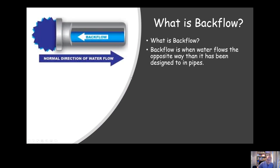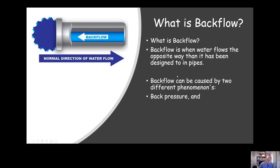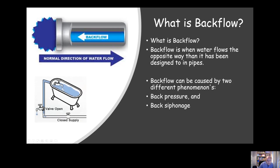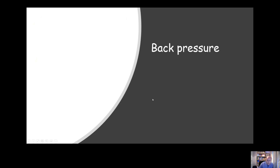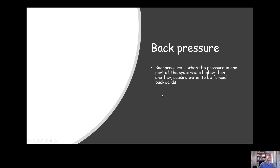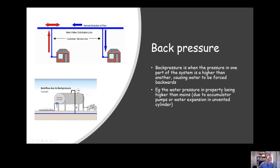So firstly, what is backflow? Backflow is essentially when water flows the opposite way than it's designed to in the pipes. It can be caused by two different phenomena: back pressure and back siphonage. The example on the left shows back siphonage — we'll chat through that in a bit more detail in a second. Back pressure is when the pressure in one part of the system is higher than another, forcing water back the opposite way than it's been designed.